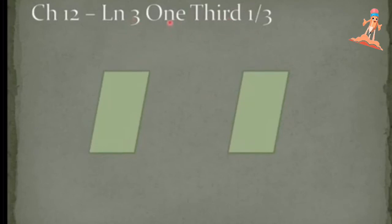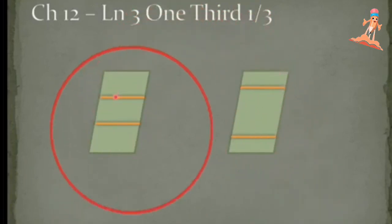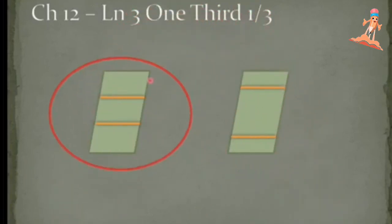We are doing one third. This figure we are dividing into three parts, and this figure also we are dividing into three parts. But which figure has three equal parts? It is this figure. Good job!